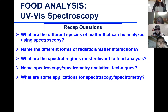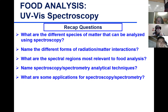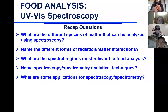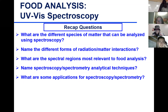So what are the spectral regions most relevant to food analysis? Holland says UV, visible, and infrared. These are the three most relevant in food analysis.